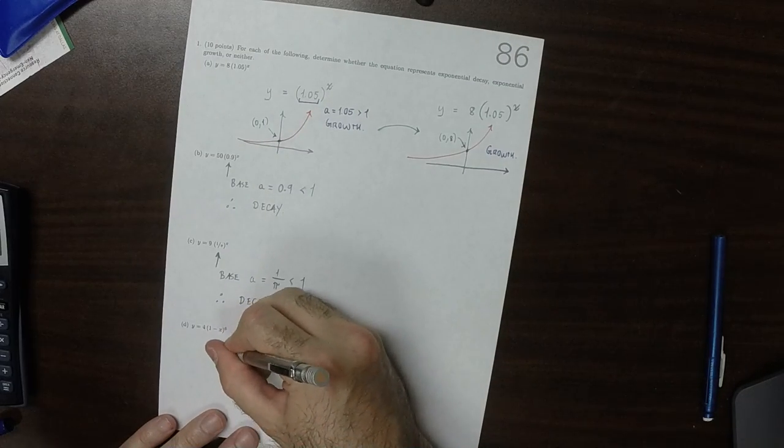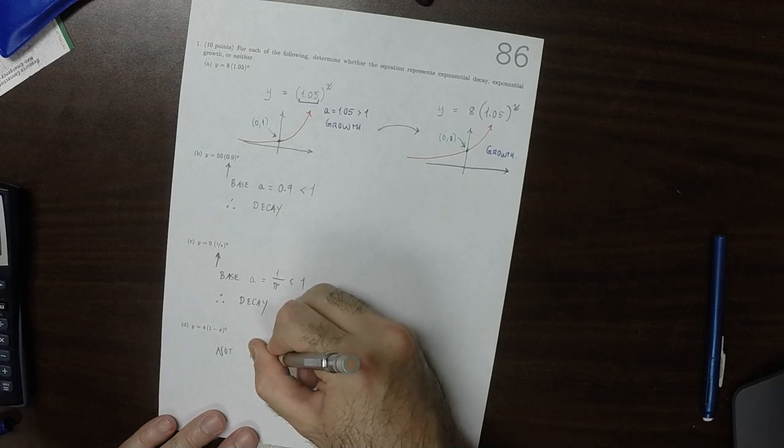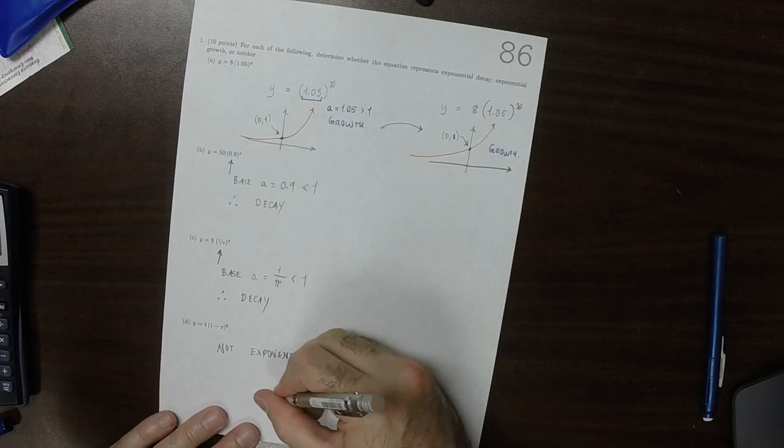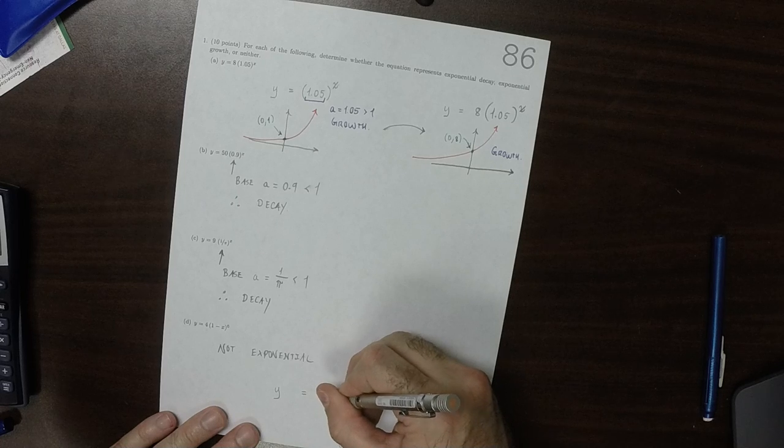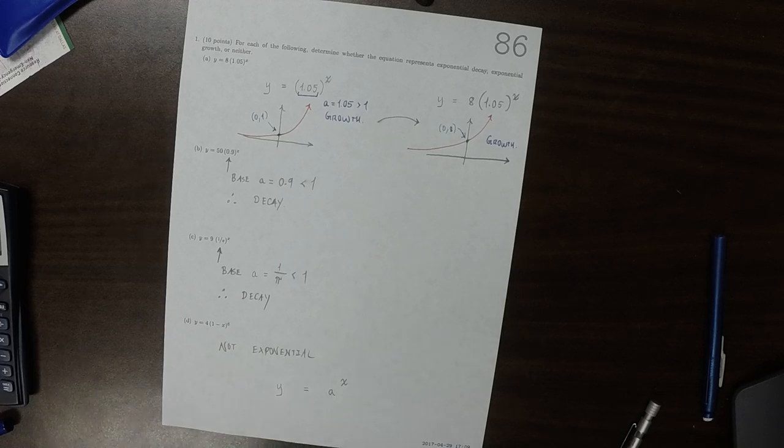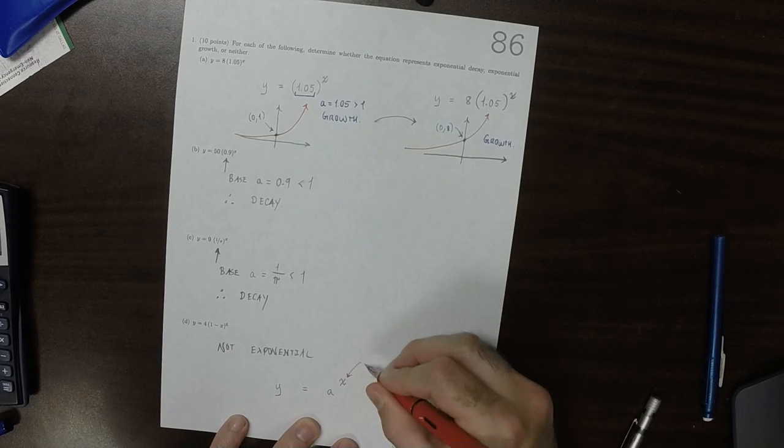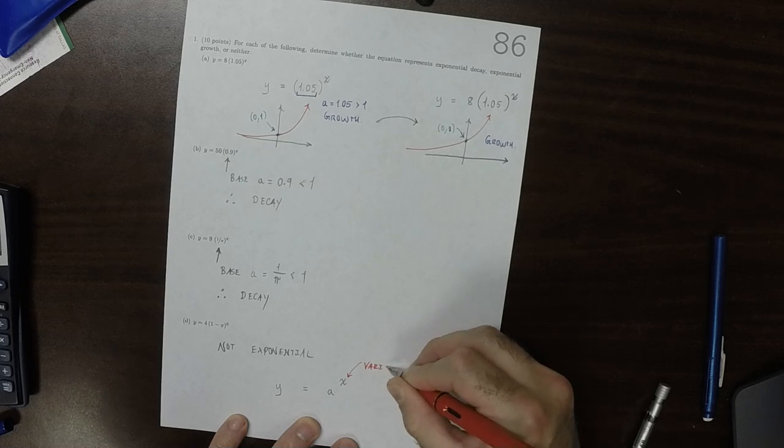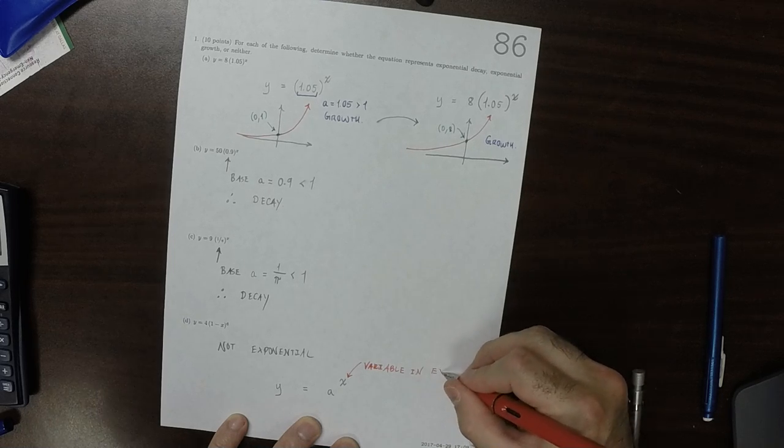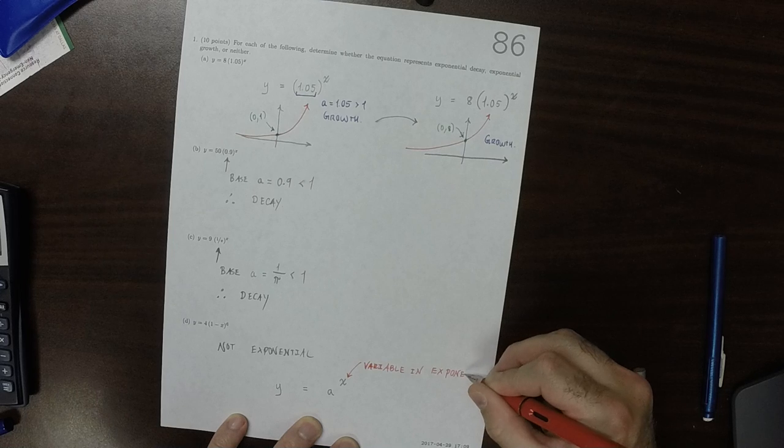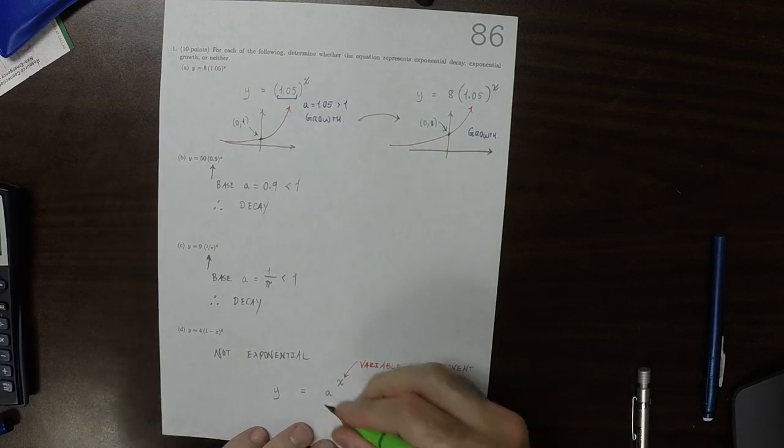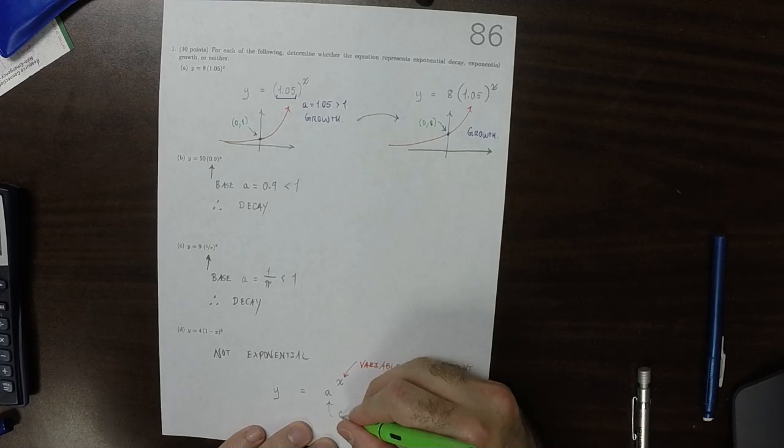And then finally, this one is not an exponential. To remind you, to be exponential it has to be in this form: the variable has to be in the exponent.